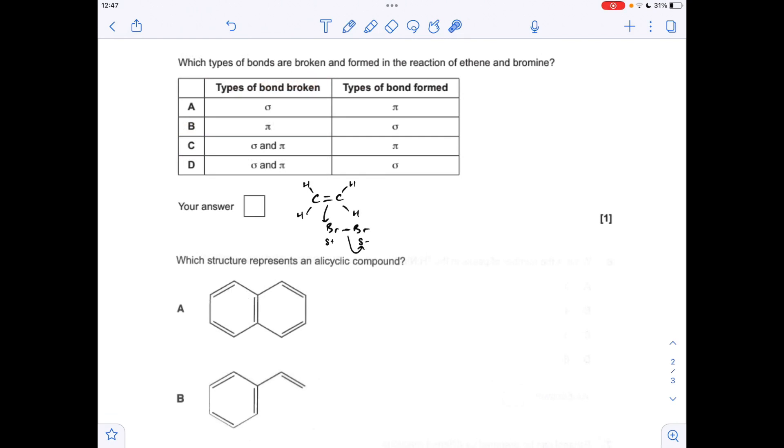Moving on to the next one, we've got to establish the types of bonds broken in the reaction between ethene and bromine. So these are the bonds broken. So what have we got here? That's a pi bond that's going to break there. And that's a sigma bond that's going to be broken there. Then if we move on to the bonds formed now. So this is a new bond. That's a sigma bond. This is going to be a new bond here formed. And that's a sigma bond as well. So option D was the answer.